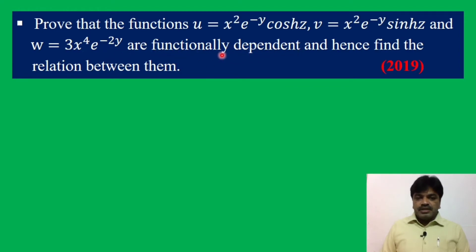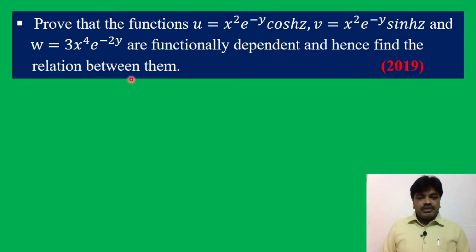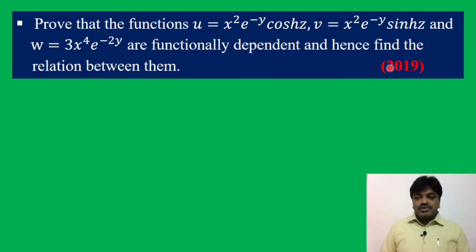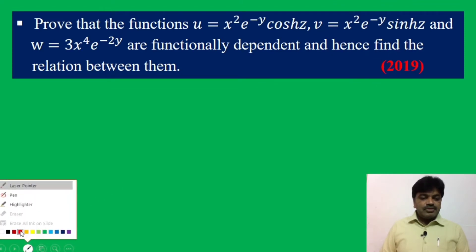First we have to show that these functions are functionally dependent, and hence find the relation between u, v, and w. This is a 2019 question — a very important problem. Let us see the solution.